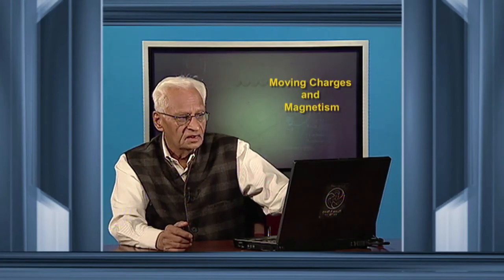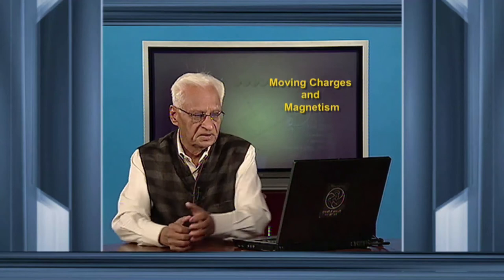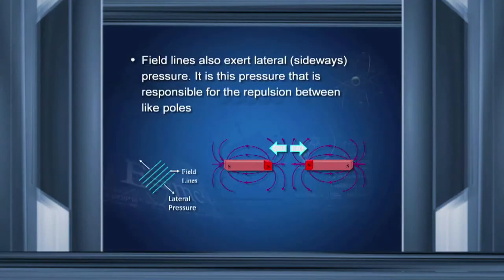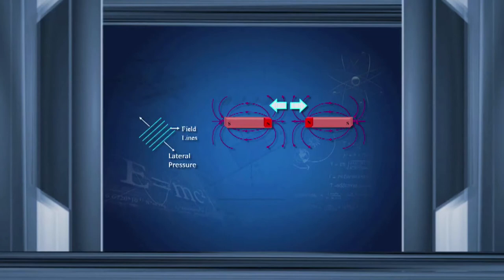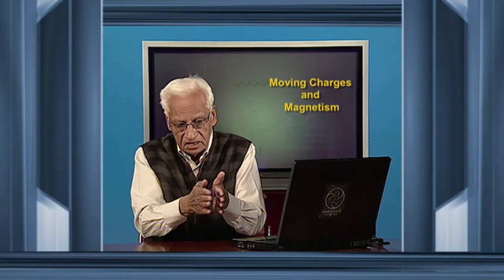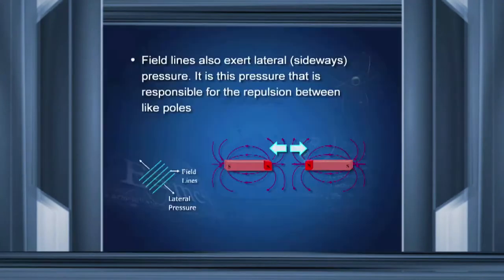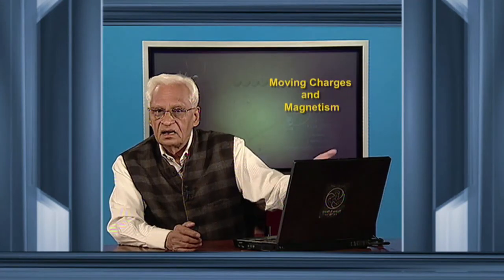Also, field lines exert lateral, that is sideways, pressure, and this results in the repulsion of two like poles. Where two north poles are placed near each other, the field lines repel sideways, and this gives rise to repulsion between like poles.